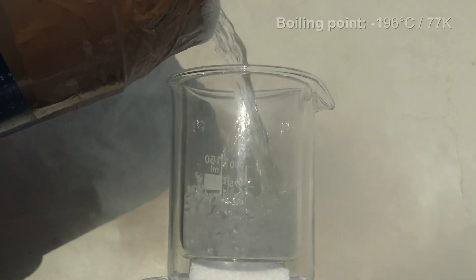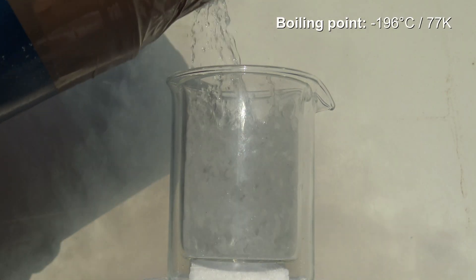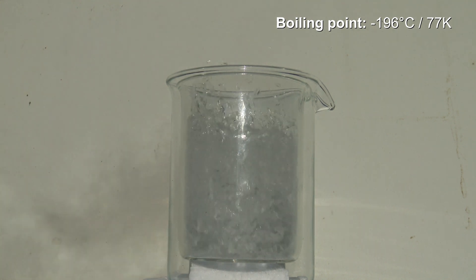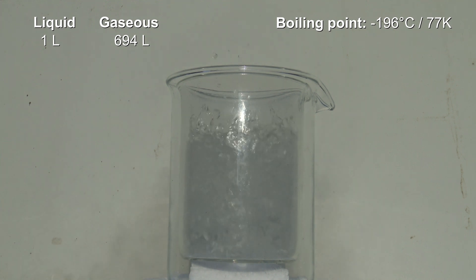Liquid Nitrogen has its boiling point at minus 196 degrees C or 77 Kelvin, which is why it boils on contact with every surface until it has cooled down. When the Nitrogen reaches room temperature it can take up to 694 times of its volume.